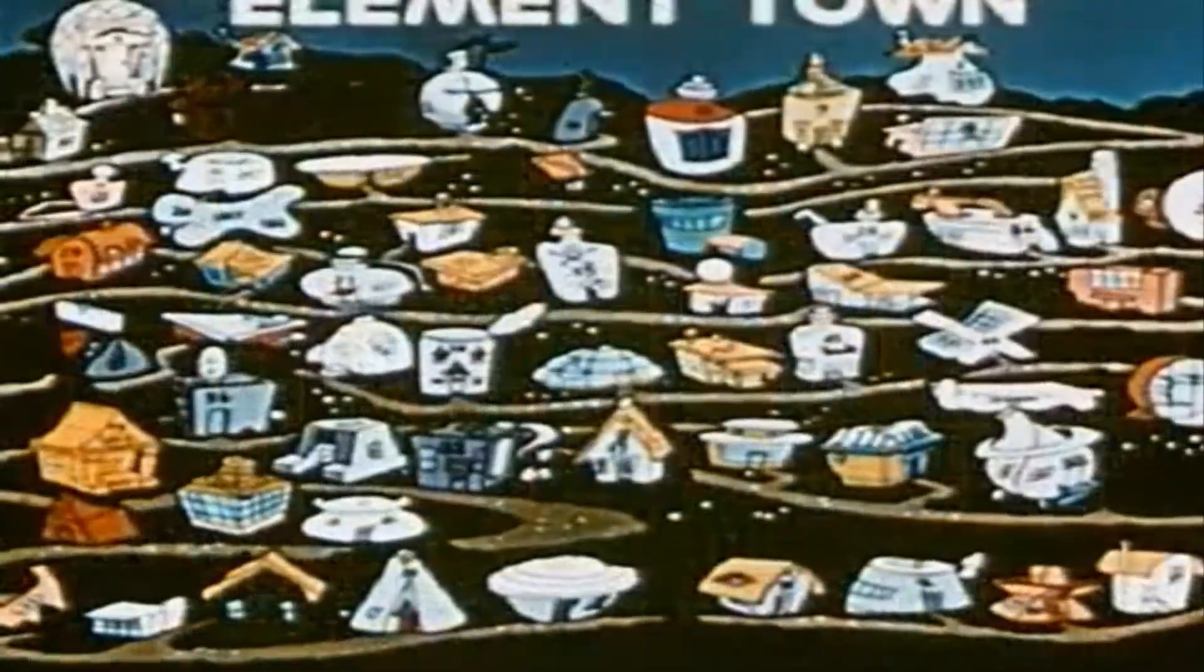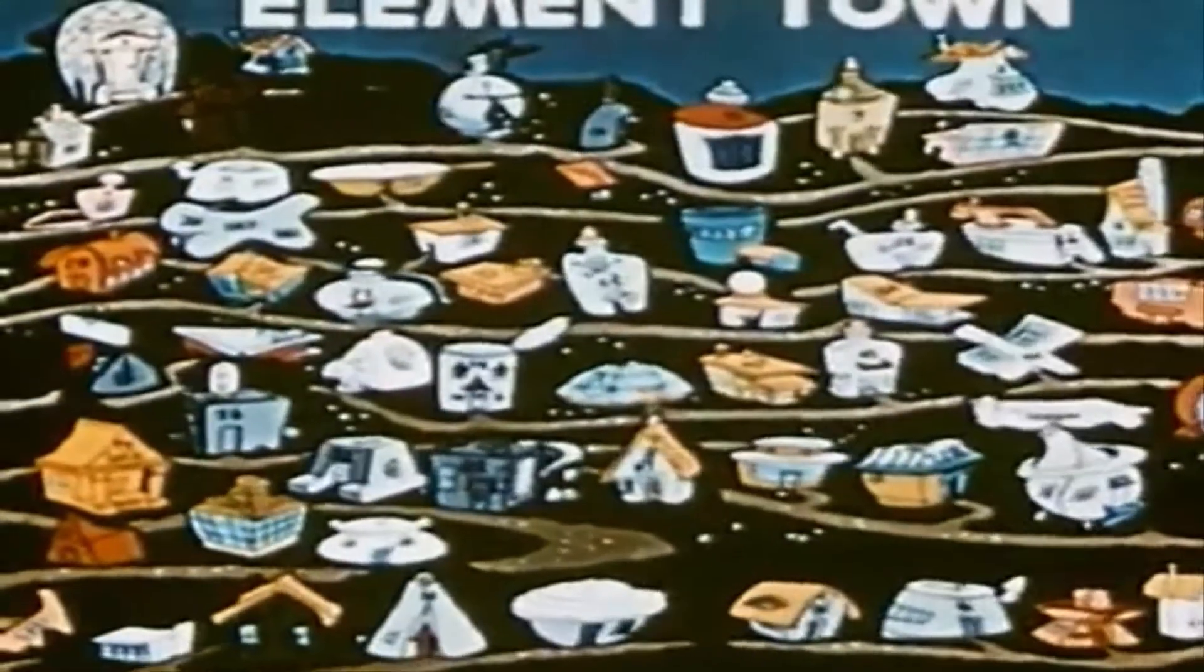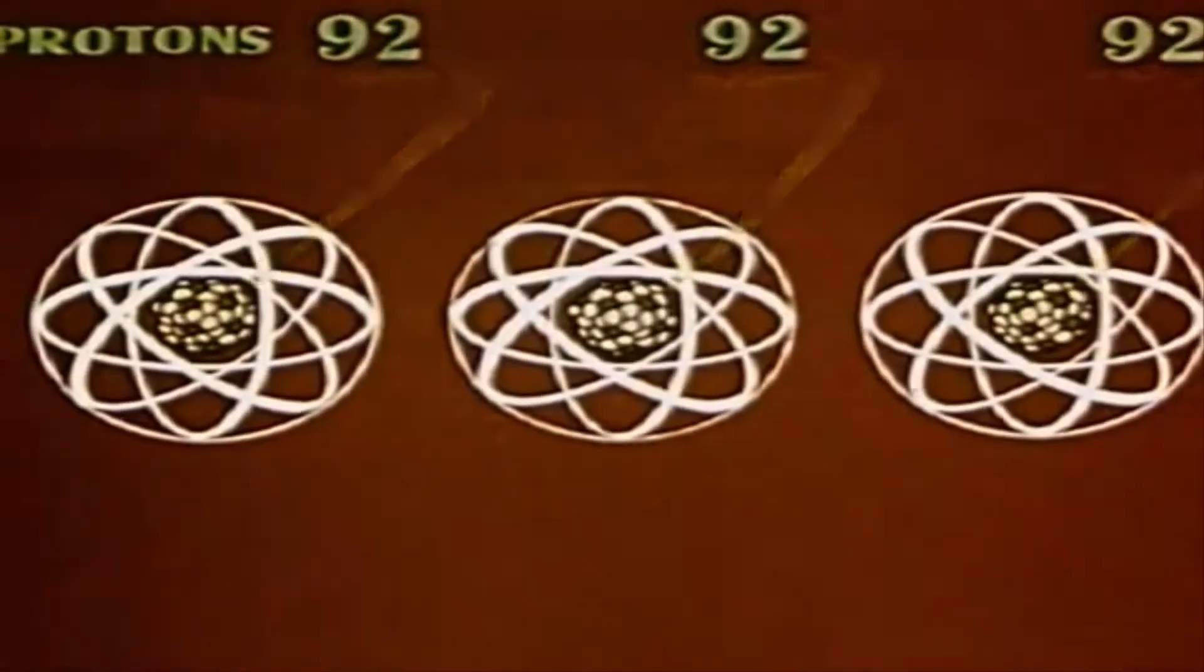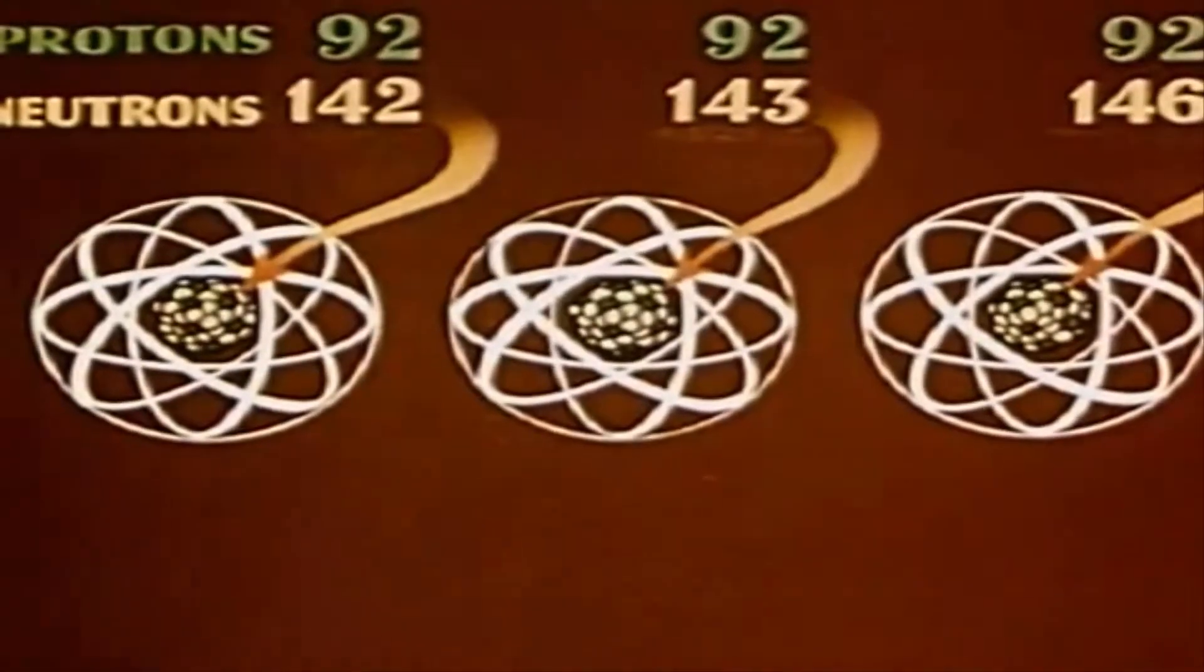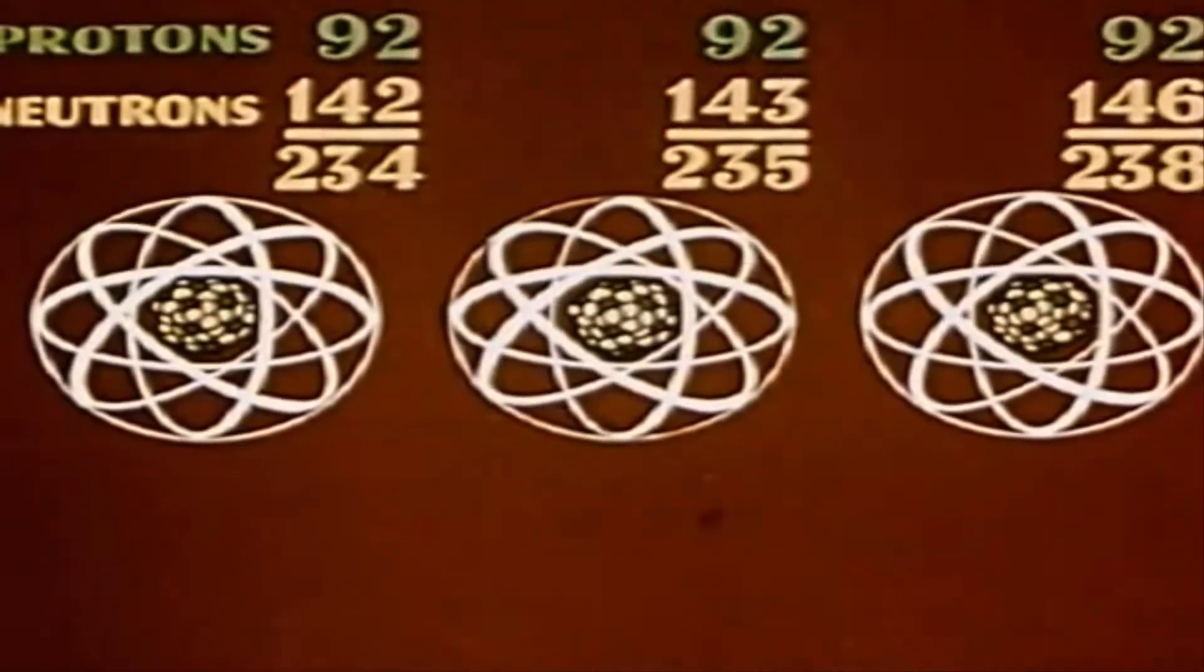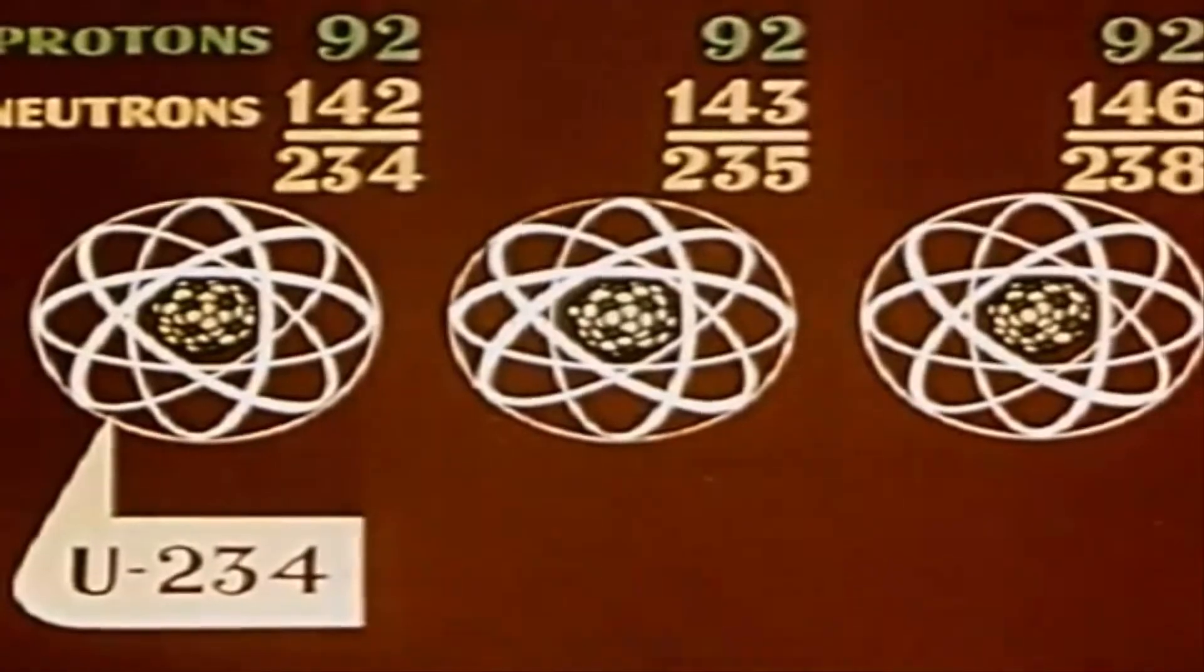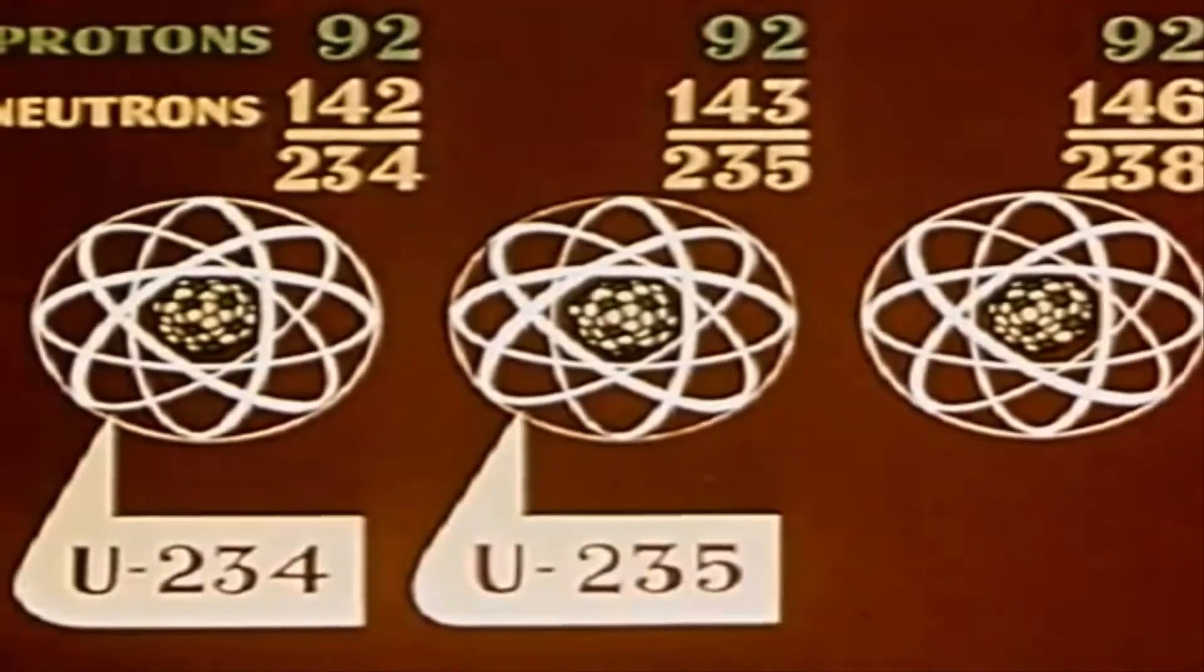It's called the God particle because when energy does interact with this Higgs field, physical mass comes into being. If we could control and harness the power of the Higgs boson or the Higgs field, we could tell the Higgs field what kind of physical matter to make out of the energy.